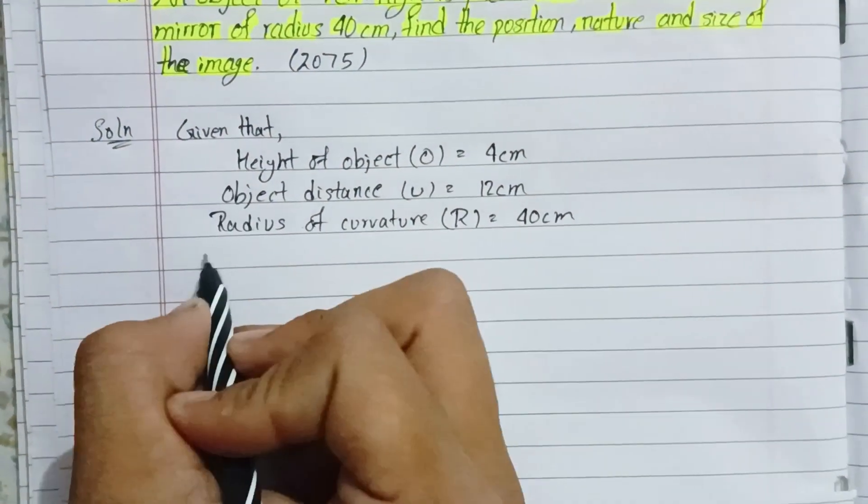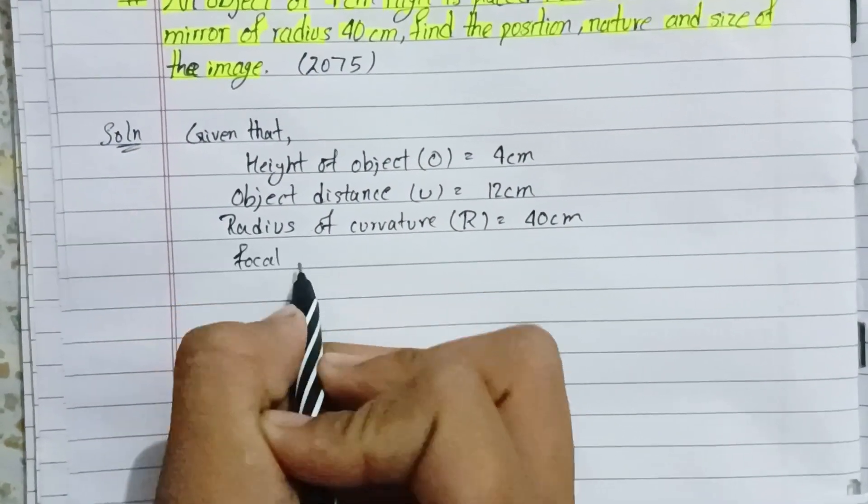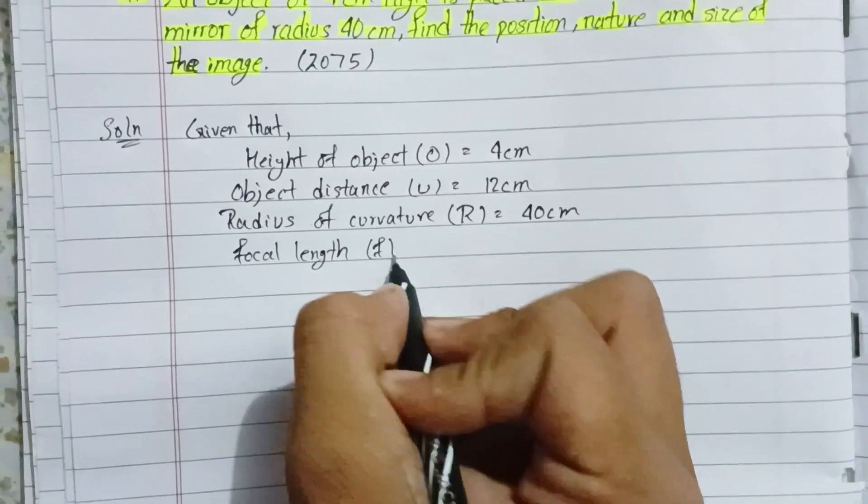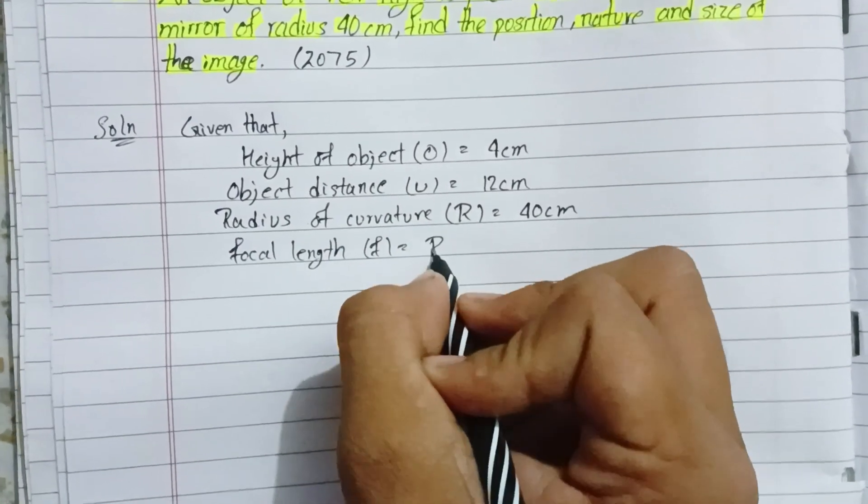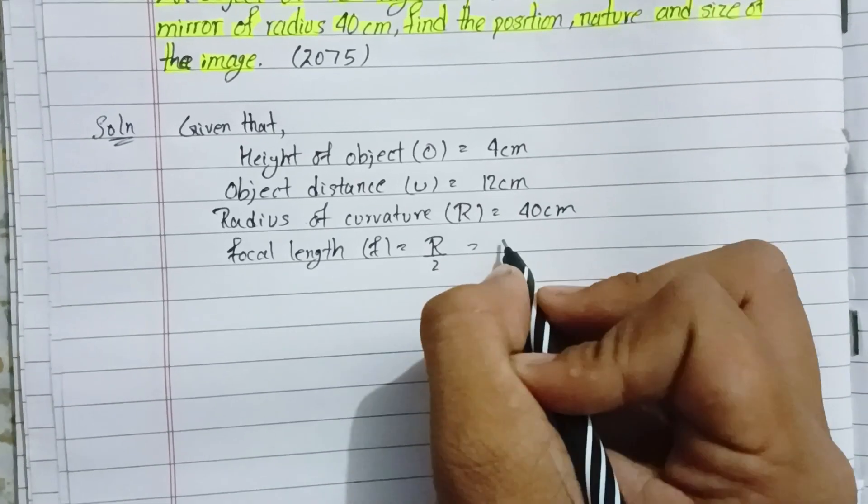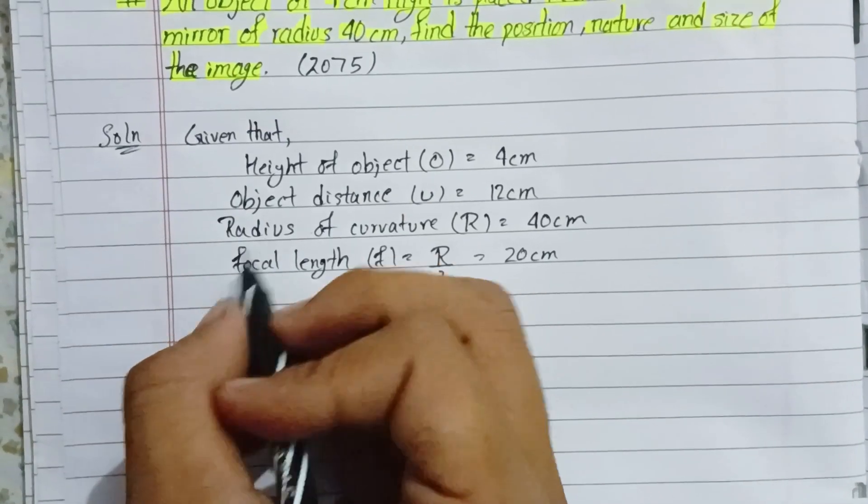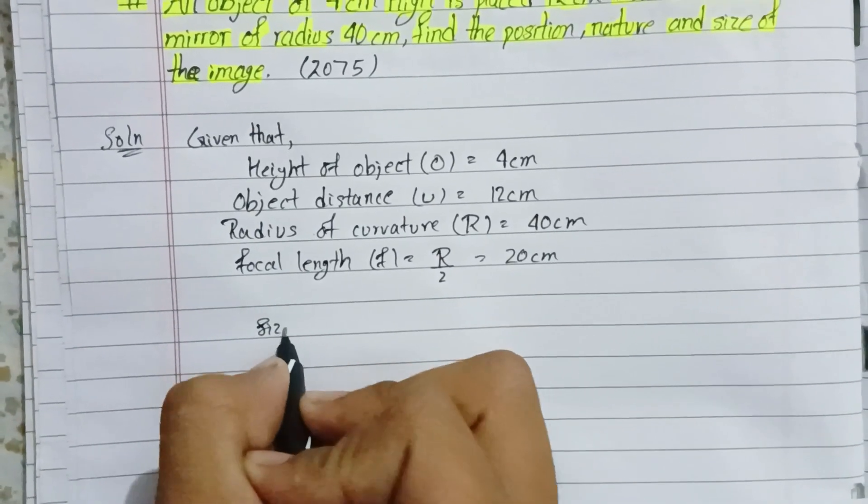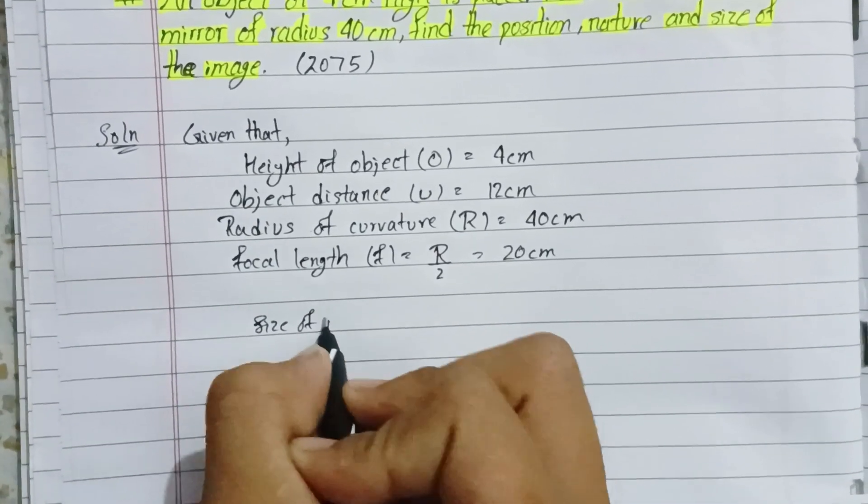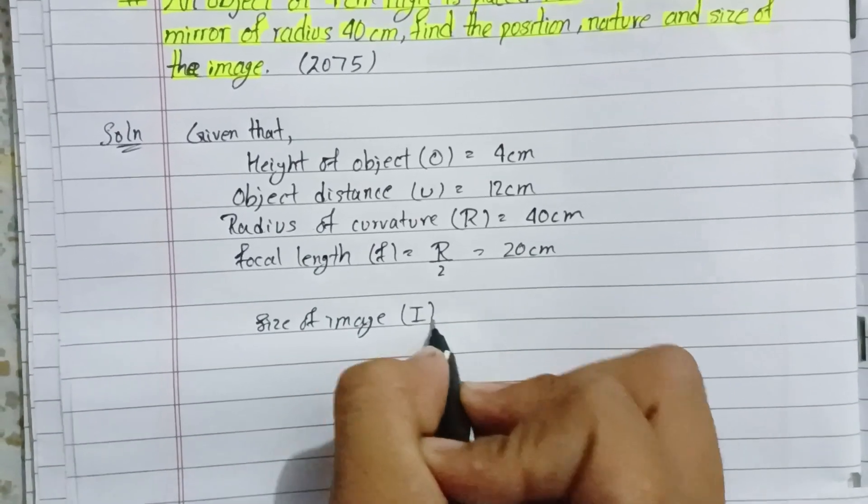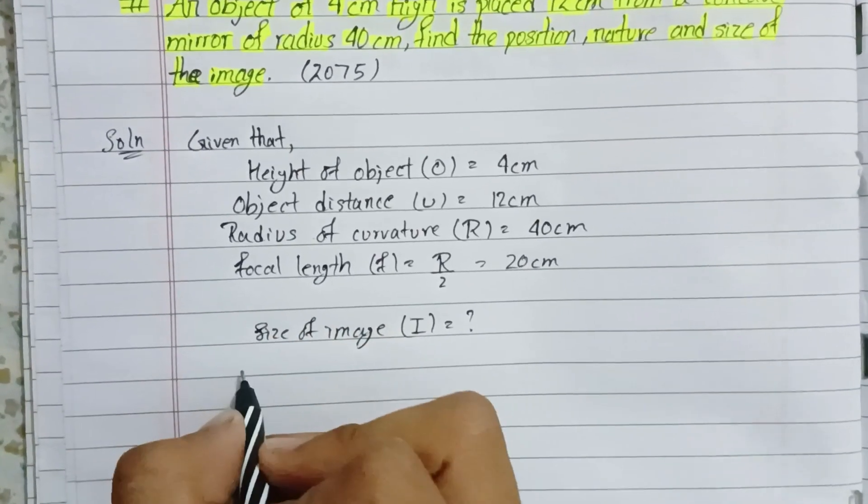Focal length f equals R by 2, which is 40 by 2 equals 20 cm. Now for size of image I and image distance v.